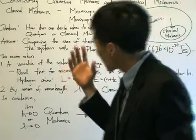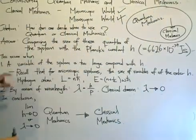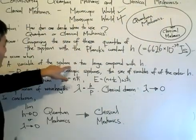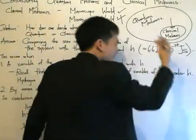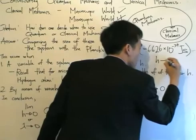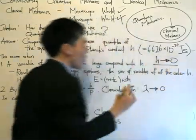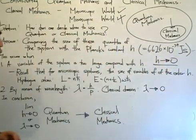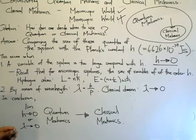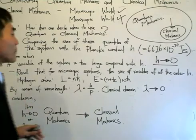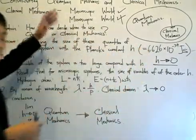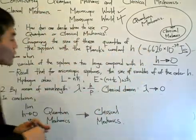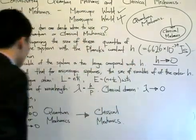We really want to consolidate the two by comparing the size of the quantities of the system with Planck's constant. And this occurs in two cases. The first case: it happens when a variable of the system is too large compared with h. When this happens we describe the limit as h tends towards 0.